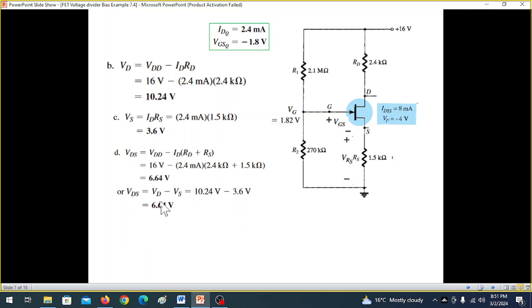Or we can also find VDS from here. VD, this voltage VD minus this VS. VD we had calculated 10.24V. VS also calculated 3.6V. So you get the same answer, 6.64V. I hope you've been able to follow this. Exactly the same technique we are following. Thank you.